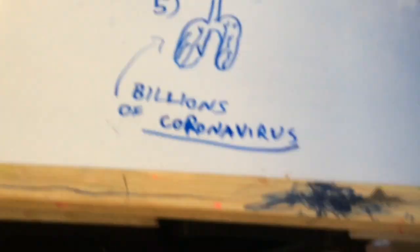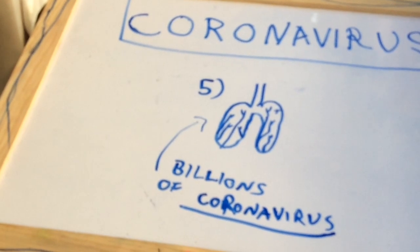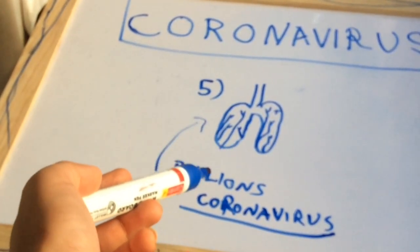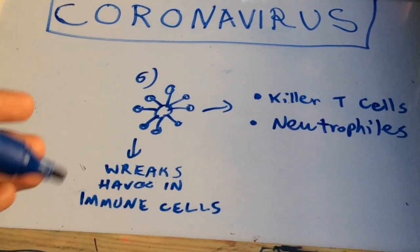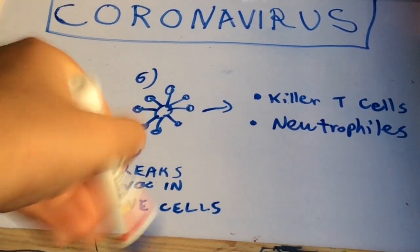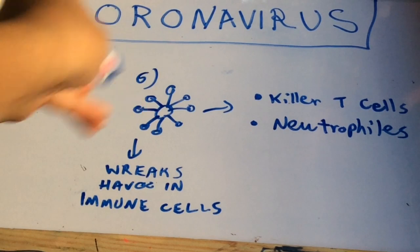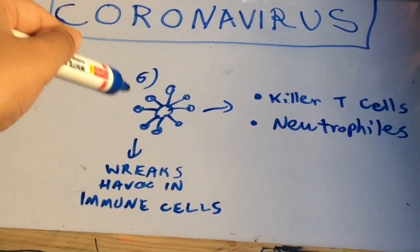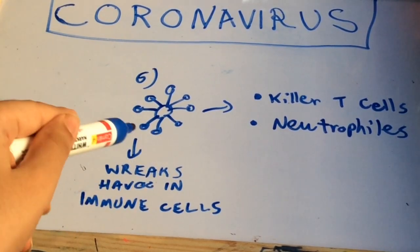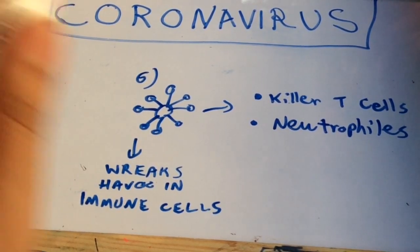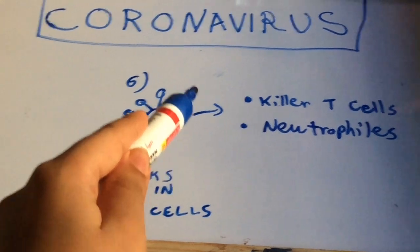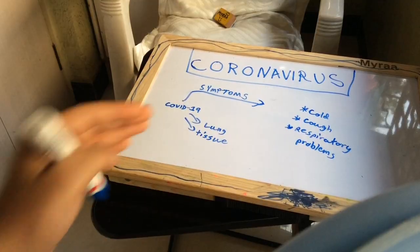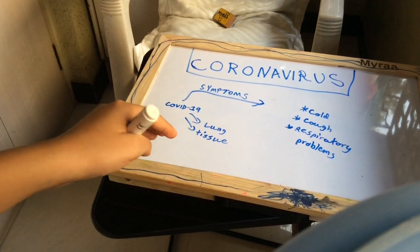Billions of coronavirus specimens then enter your lungs. Billions of viruses travel through your lungs. Your immune cells come to fight off this deadly thing, but the coronavirus has a scheme — it wreaks havoc in your immune cells, mostly infecting your killer T-cells and your neutrophils.